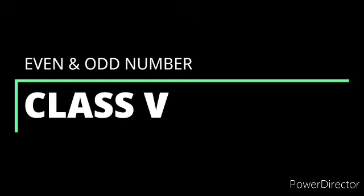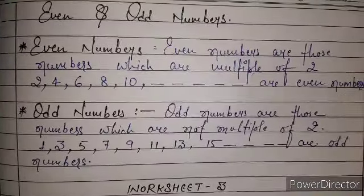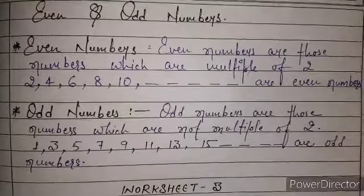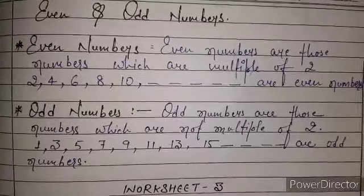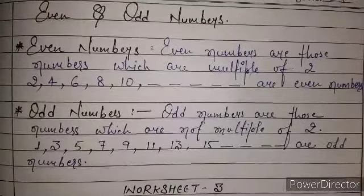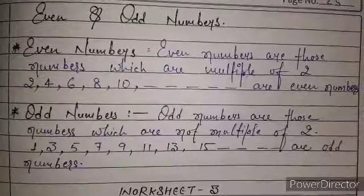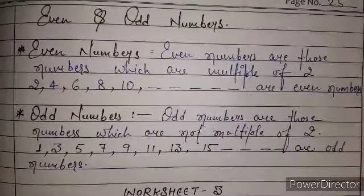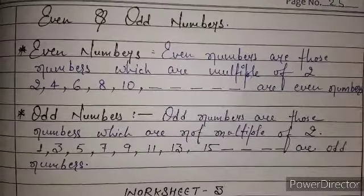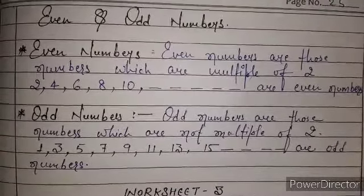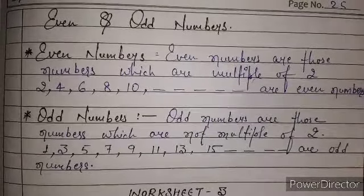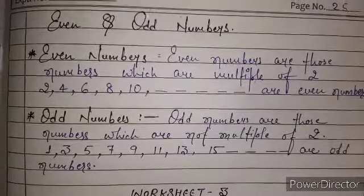Today we will read about event numbers and odd numbers. Event numbers are those numbers which are multiples of 2. 2, 4, 6, 8, 10 are event numbers.